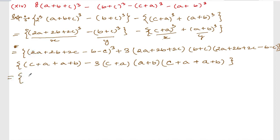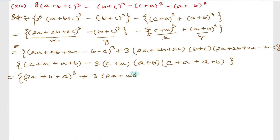From the first one: (2a plus 2b minus b) is (a plus b), (2c minus c) is plus c, so (a plus b plus c) whole cube. Plus 3 times (2a plus 2b plus 2c) times (b plus c). From here you can write down (2a plus 2b plus 2c).